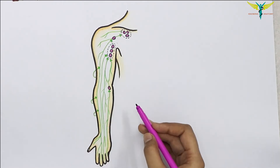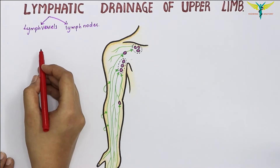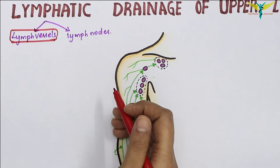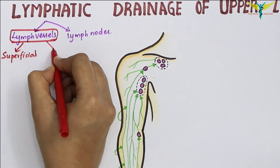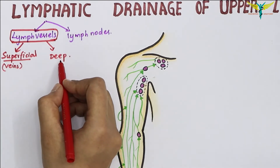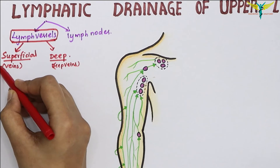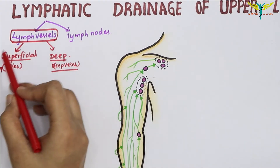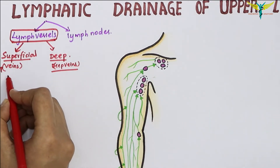For the lymphatic drainage of the upper limb, we need to learn about the lymph vessels and the lymph nodes. The lymph vessels are divided into two groups: superficial and deep. The superficial vessels generally follow the superficial veins, while the deep lymph vessels follow the deep veins. The lymph collected from both superficial and deep lymph vessels drains into the axillary nodes.